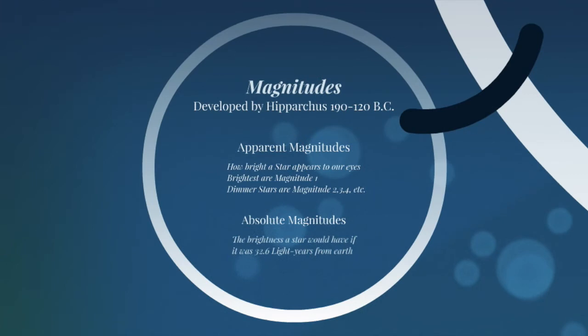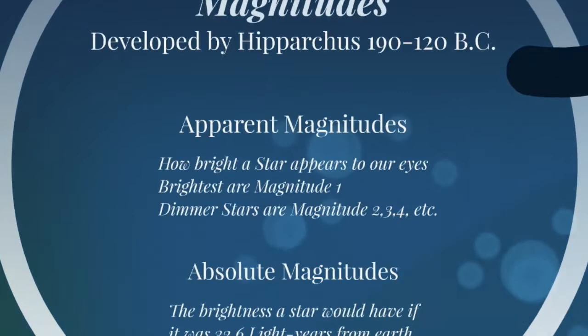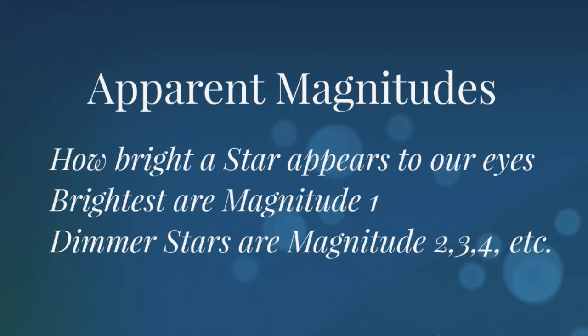So in the ancient Greeks, 190 to 120 BC, they came up with a way to think about these things. And they used a magnitude system. Astronomers today still use a magnitude system. And the magnitude is how bright a star appears to our eyes.